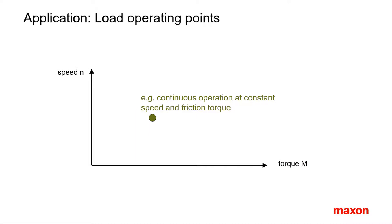Starting point for gearhead selection is the motion of the load. The necessary operation cycle, speed profiles, and friction result in speed and torque requirements the drive has to fulfill. In our standard diagram with motor speed as a function of torque, this can be represented as points of operation.